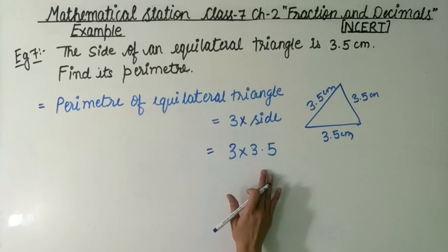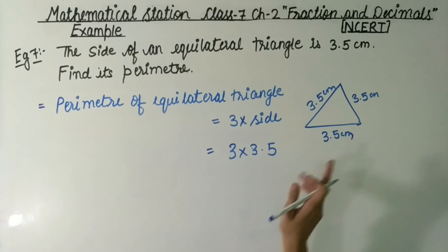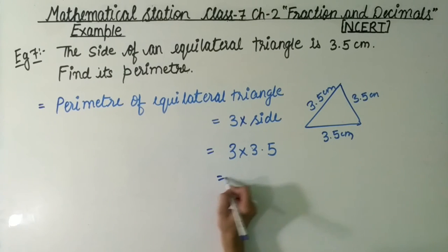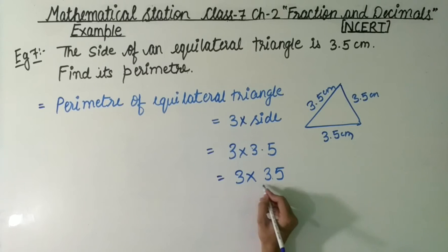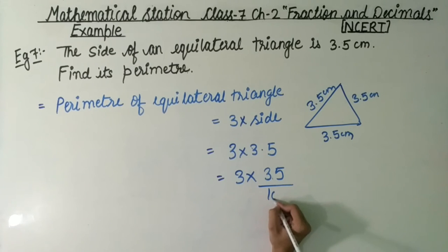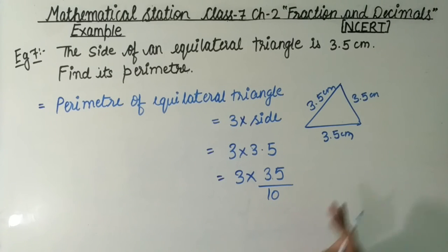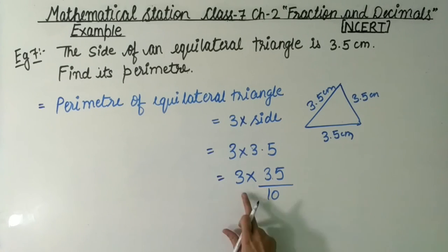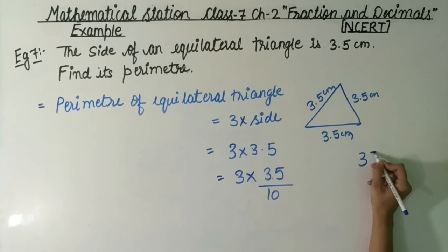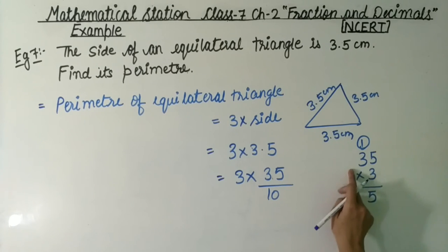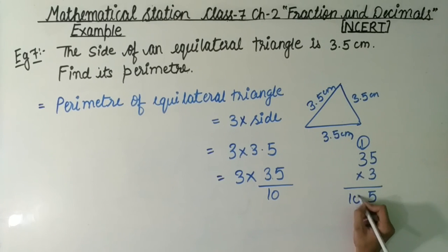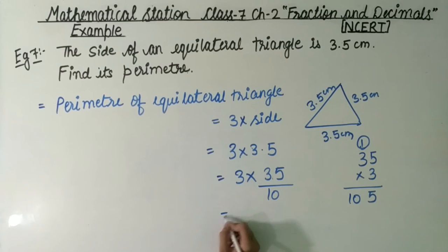We convert this into a whole number and a decimal. We take 3.5 and write it as a fraction — moving the decimal gives us 35 over 10. We multiply 7 by 3, and between 3 and 5 we get 15.